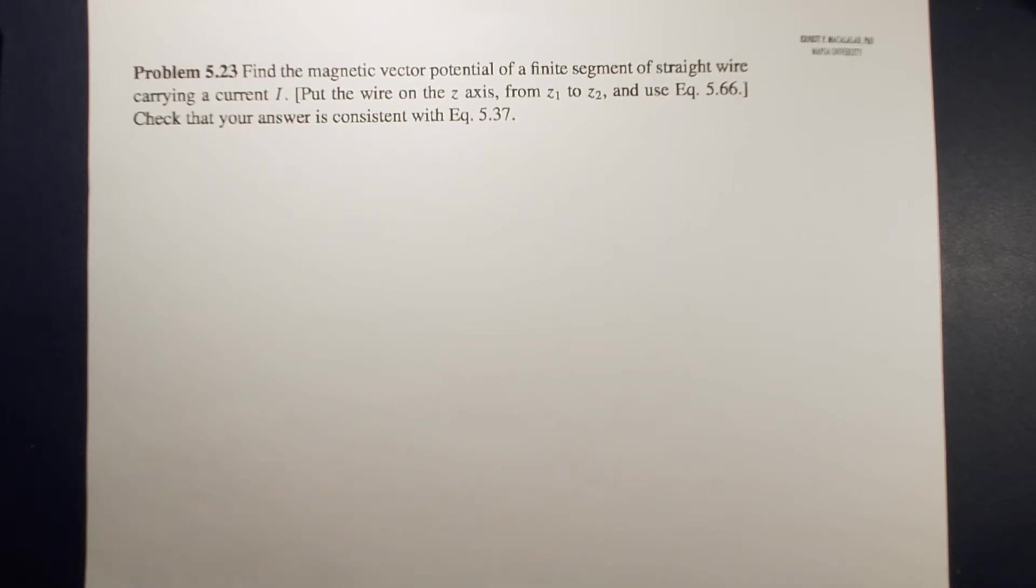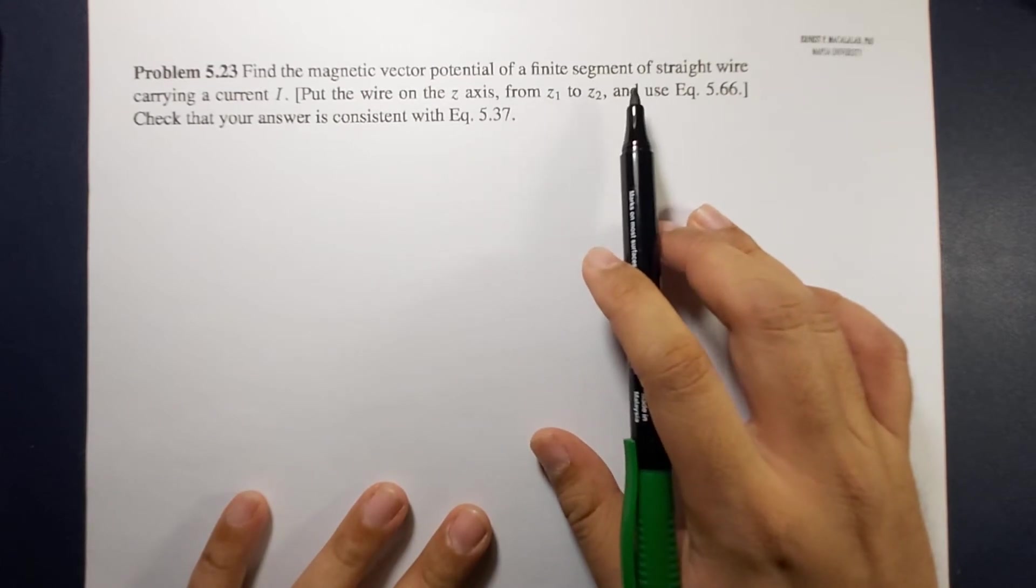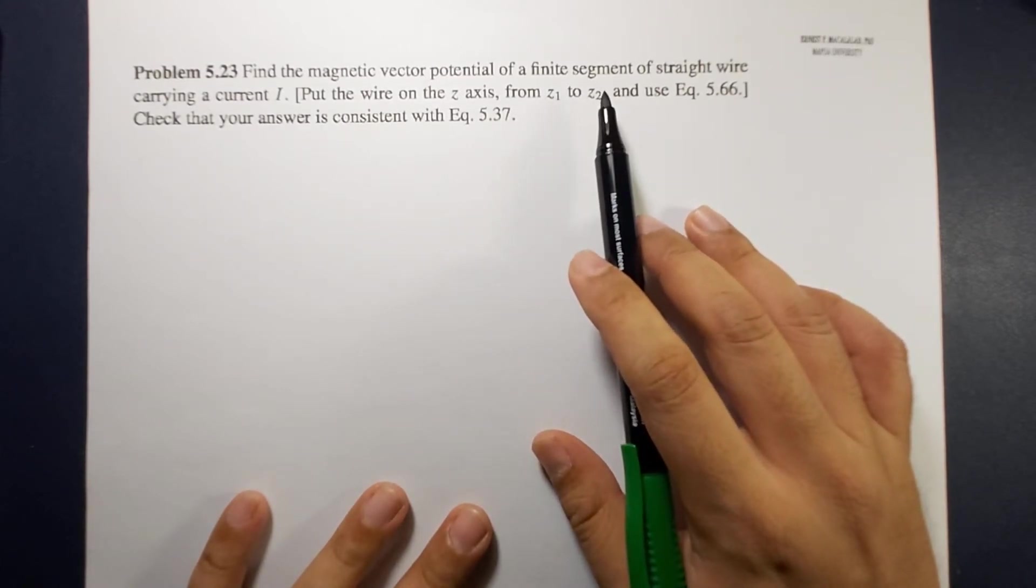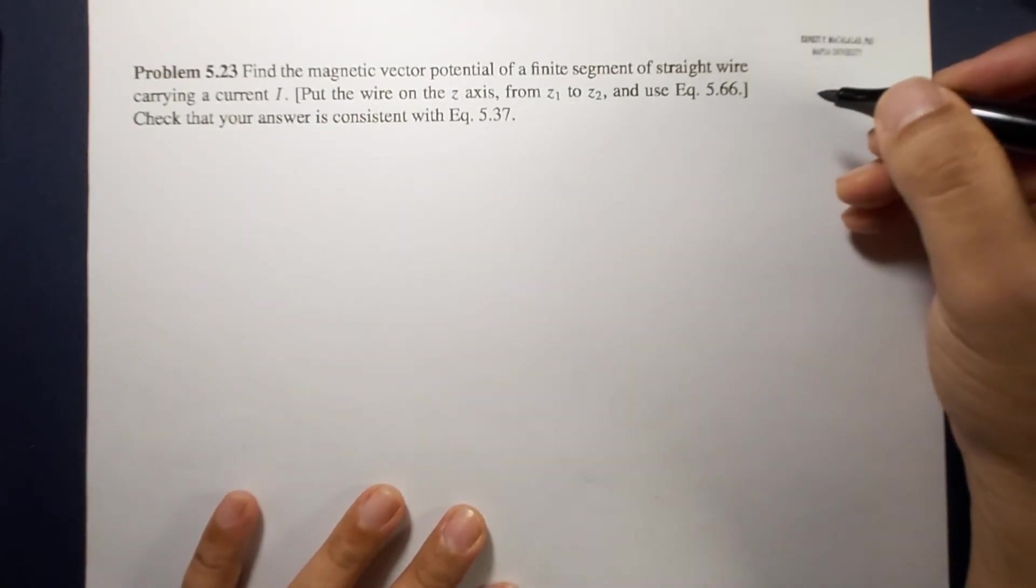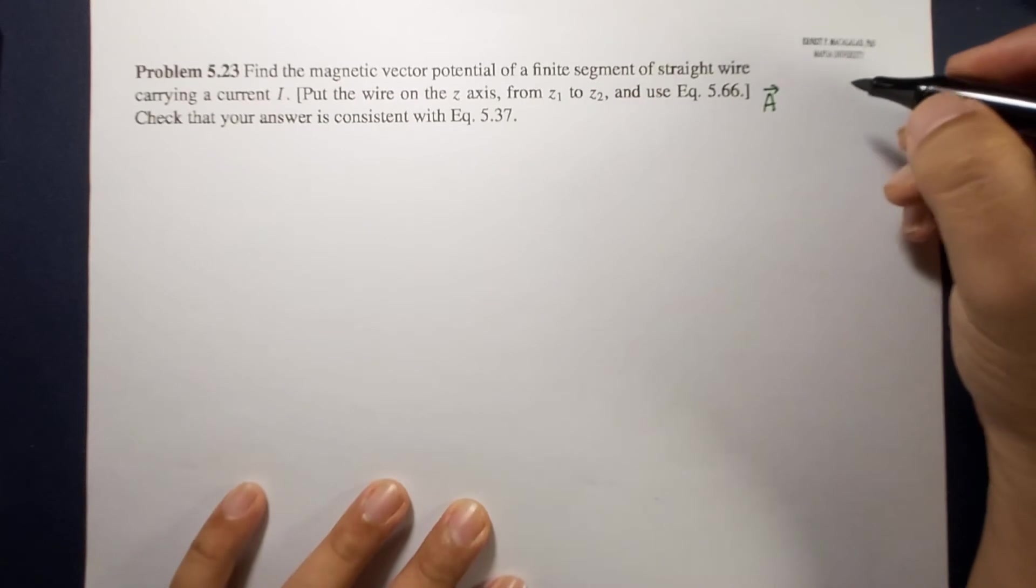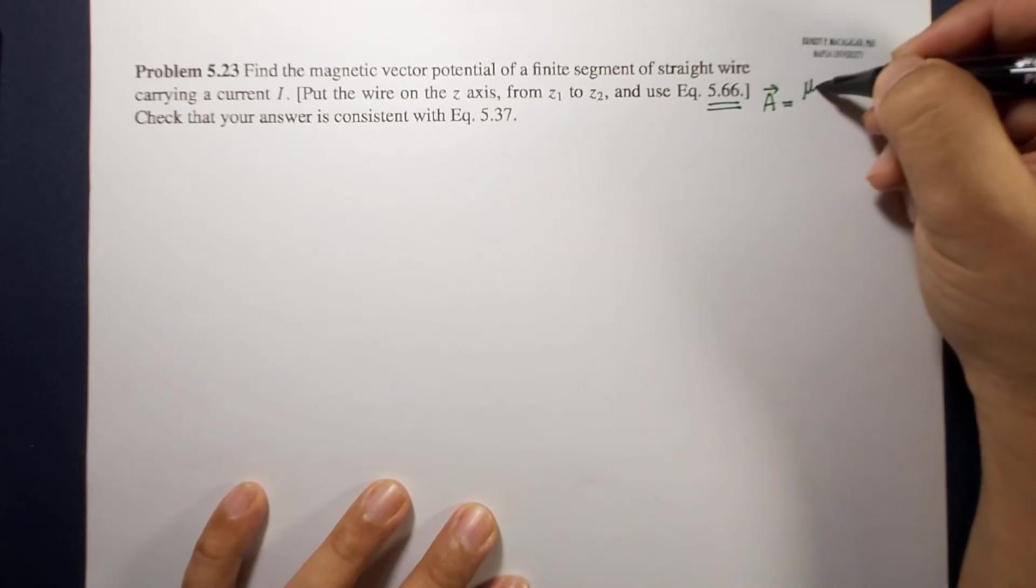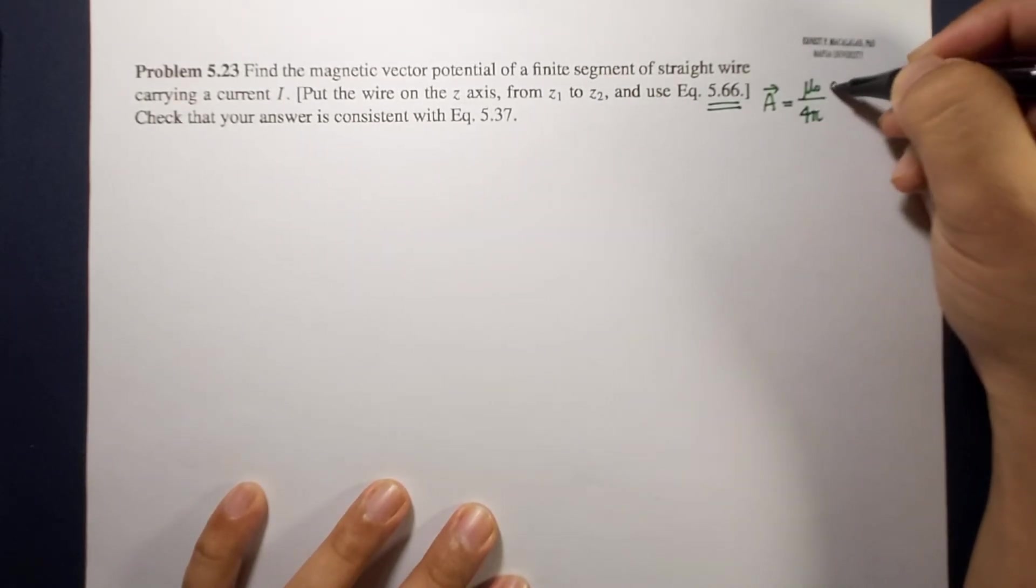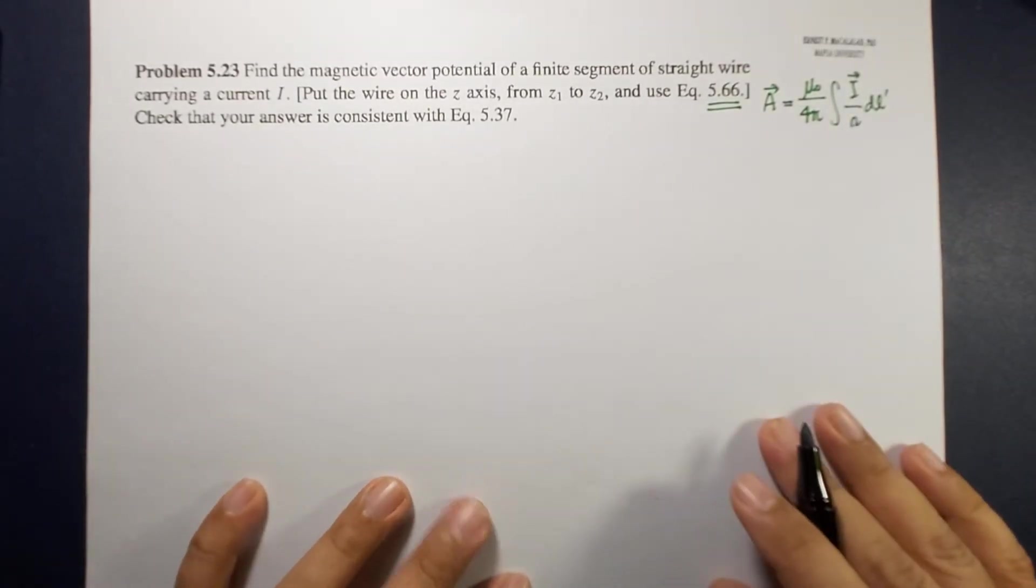So first let's look at equation 5.66. As mentioned here, our wire or our current configuration is a straight wire. So that means we're going to look for the vector potential A for a line current and based on equation 5.66, this is equal to mu naught over 4 pi times integral of i vector over script r dl prime.